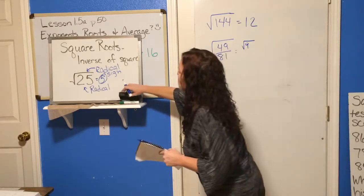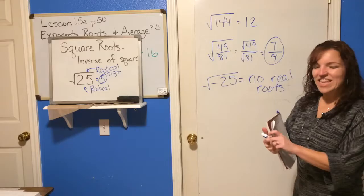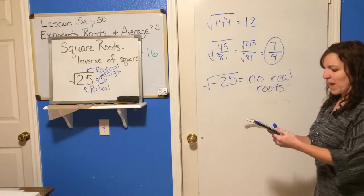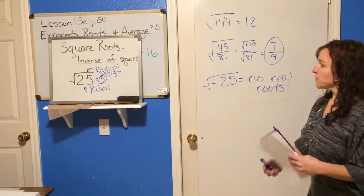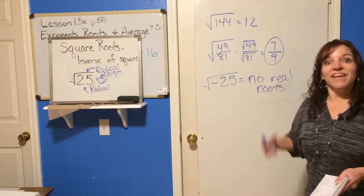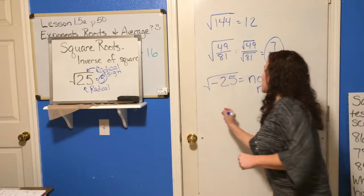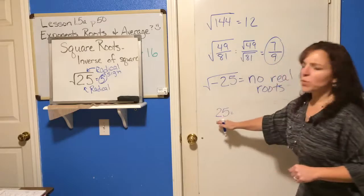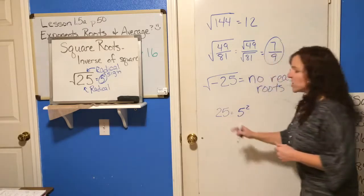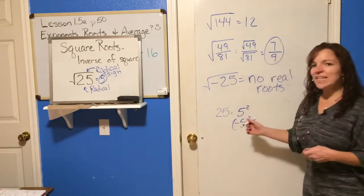Here we've got parentheses around negative 2 thirds, so we're going to multiply the whole thing as our base — the whole negative 2 thirds — and 3 is our exponent. We read that as negative 2 thirds cubed. The exponent 2 means squared and the exponent 3 means cubed. So that says negative 2 thirds times negative 2 thirds times negative 2 thirds. We multiply 2 times 2 times 2: 2 times 2 is 4, times 2 is 8. And 3 times 3 is 9, times another 3 is 27.